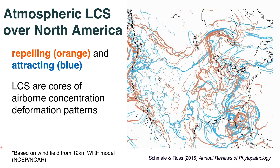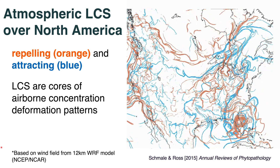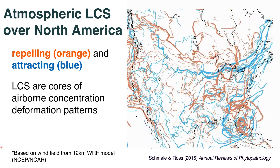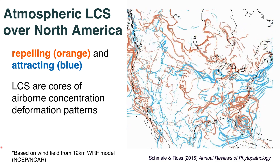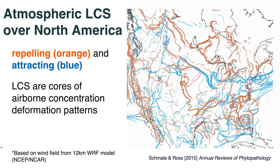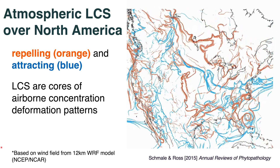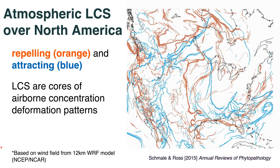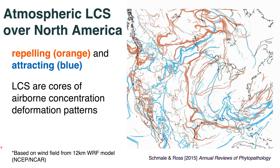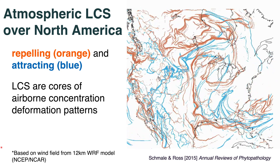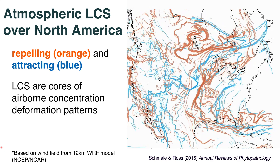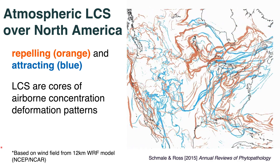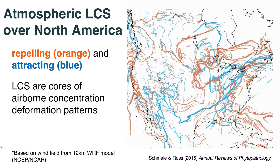We can apply this to more complicated fluid flows, such as an atmospheric flow. Shown here is the atmospheric LCS over North America, both the repelling in orange and attracting in blue, and you see that they intersect and move in very different ways. These LCS are cores of airborne concentration deformation patterns, or air mass movements.